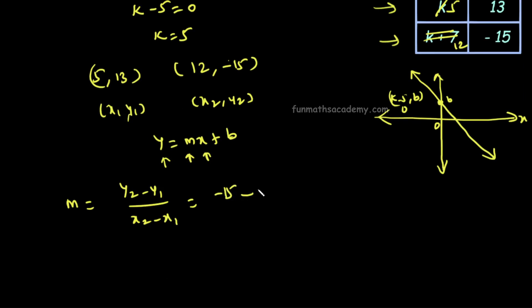y1 is 13, x2 is 12, x1 is 5. So this is minus 28 divided by 7, which equals minus 4. So m value is minus 4.